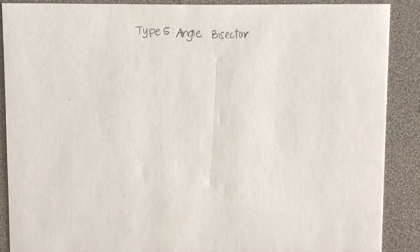For this construction, we're going to make an angle bisector. That means it's going to cut the angle in half.